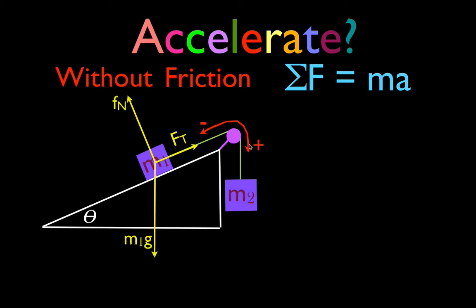These are the forces acting on M1. There is the force due to gravity M1G, the normal force from the surface of the incline plane, and then the tension force from the string. Those are the three forces acting on M1.